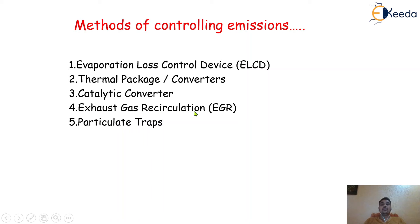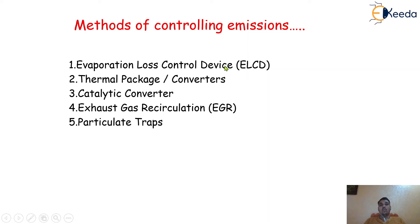The next one is exhaust gas recirculation, also called the EGR system. And the last one is the particulate trap. So, these are the different methods and devices which are available and we can use to control exhaust gas emission. In the next videos, we are going to discuss each of these particular different methods of controlling emission thoroughly, one by one.